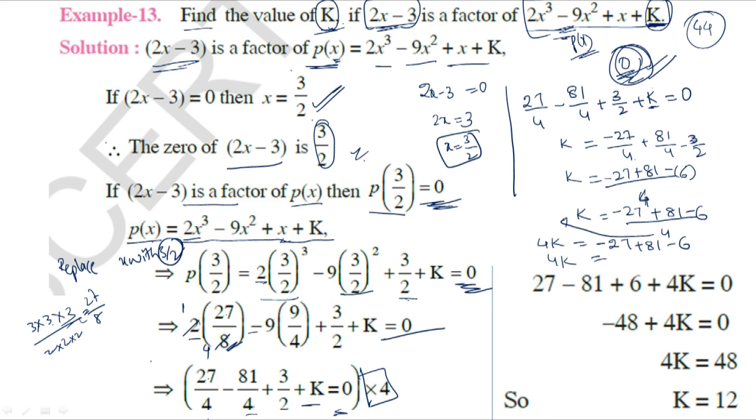4K = -27 + 81 - 6. Combining the negative terms: -27 - 6 = -33. So 4K = -33 + 81 = 48.